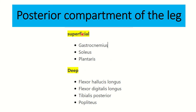In the superficial posterior compartment, there are three muscles: gastrocnemius, soleus, and plantaris — the mnemonic is GSP. In the deep posterior compartment, there are four muscles: flexor hallucis longus, flexor digitorum longus, tibialis posterior, and popliteus. So there are seven muscles total in the posterior compartment.